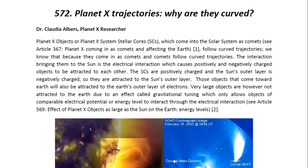Planet X objects or Planet X system stellar cores, which come into the solar system as comets, follow curved trajectories. We know that because they come in as comets and comets follow curved trajectories. The interaction bringing them to the Sun is the electrical interaction which causes positively and negatively charged objects to be attracted to each other. The stellar cores are positively charged and the Sun's outer layer is negatively charged, so they are attracted to the Sun's outer layer.